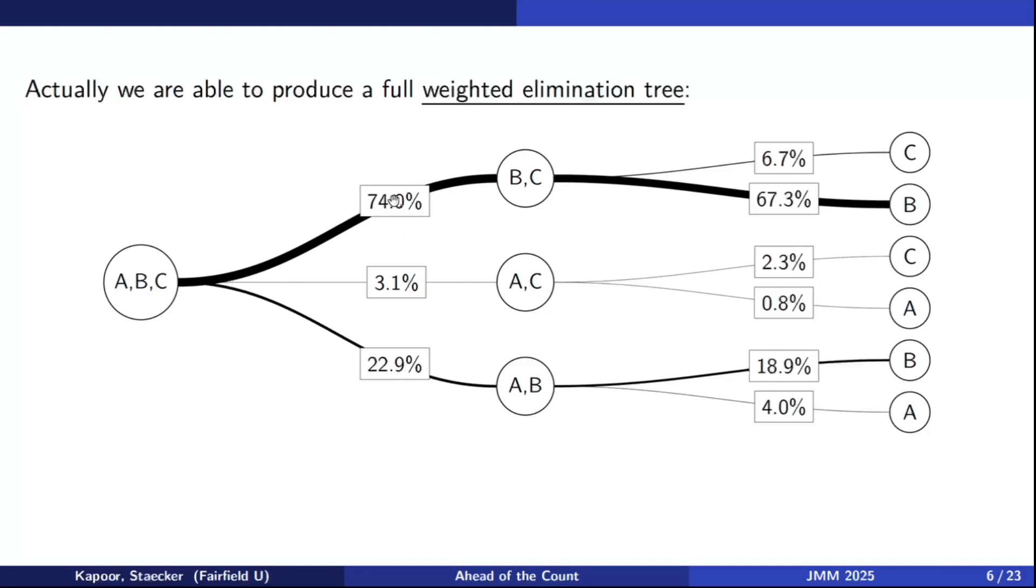In this particular example, we see A has this 4.8 chance of winning, B is 86%, and C is something like 9%. And actually, our algorithm is able to produce what we call a weighted elimination tree. What this represents is the probabilities of every round in the IRV calculation. This 74% here means that the probability that A is eliminated first is 74%. And then from there, this 6.7 means the probability that you go from here to here is 6.7%. This we call the weighted elimination tree. It describes all of the probabilities for all possible eventualities in this ranked choice selection. And just to be cute, we decided to thicken up the lines in proportion to those probabilities.